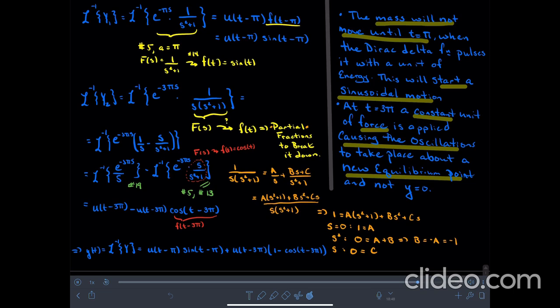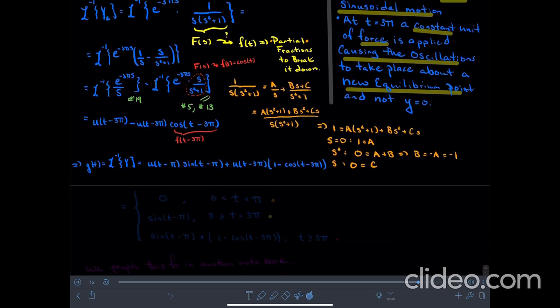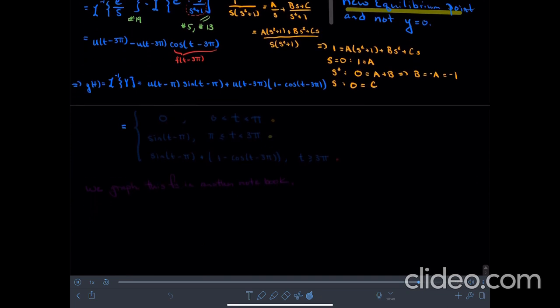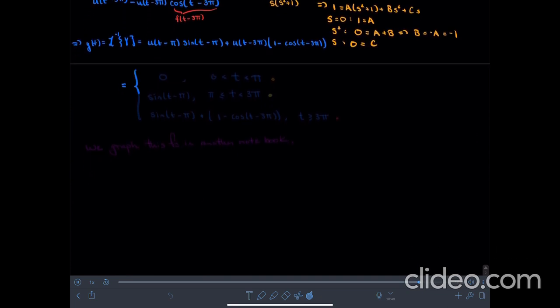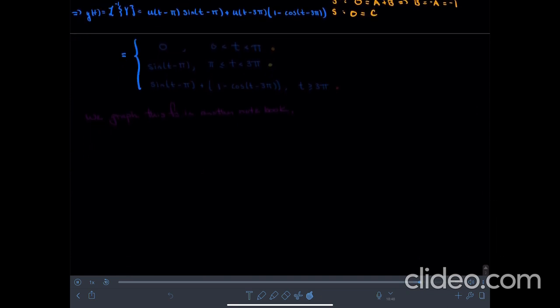So now that we have this solution, let's try to figure out what the solution is trying to tell us. Well, let's write it out in piecewise form. For all time values greater than zero but less than pi, I have zero. So let's call this the orange domain.